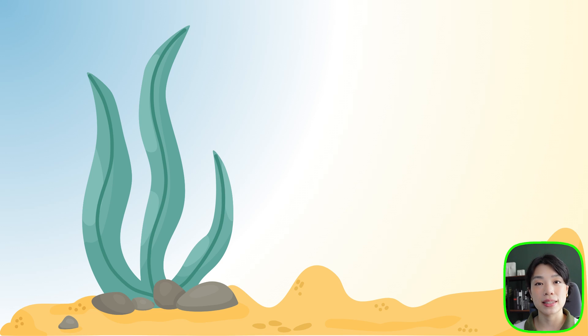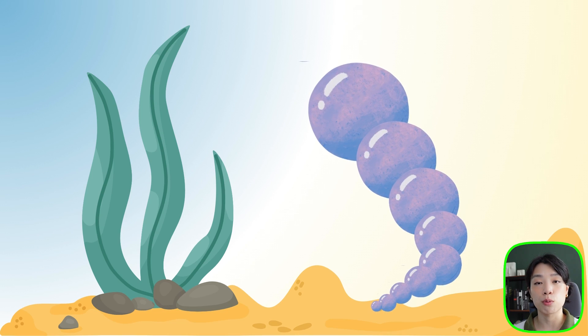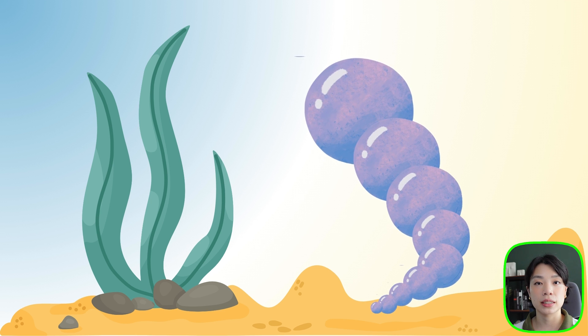A tentacle is composed of a set of circles, similar to kelp rooted in sand underwater. These sets of circles, as part of one tentacle, are tied to their roots with a varying distance of radius r from the center point. To determine the x and y coordinates of each of these circles, we'll be using trigonometry to convert from polar coordinates to Cartesian coordinates.